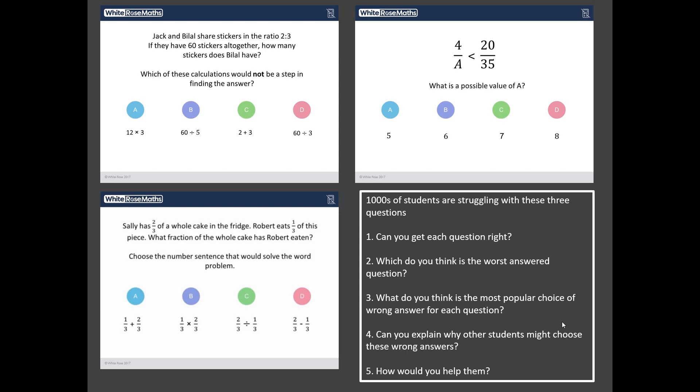And I'm going to set you five challenges. So challenge number one is, can you get each of these questions correct? Challenge number two, out of these three questions, what do you reckon the worst answered one is? And then, do you reckon you can identify the most common choice of wrong answer for each of these three questions? Challenge four, why might a student choose each of these wrong answers? And finally, and I think this is the hardest one, if a student that you knew had chosen one of these wrong answers, how would you help them? How would you explain to them, nicely of course, that they're wrong and that you're right?